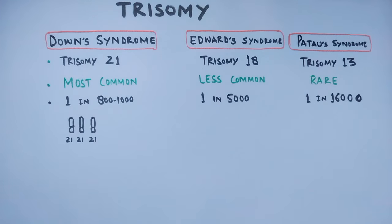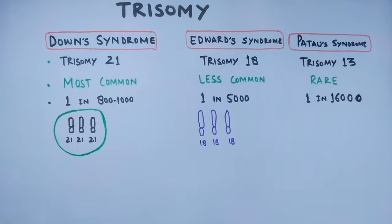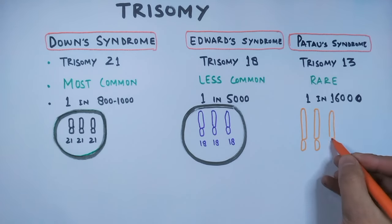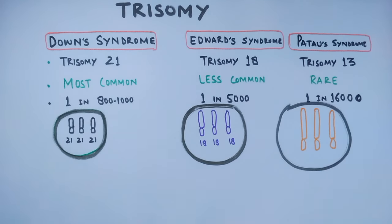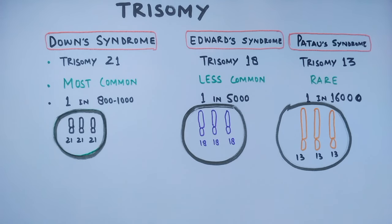Down syndrome has three copies of the 21st chromosome in the cell instead of two. In the same way, Edwards syndrome has three copies of the 18th chromosome in the cell, and Patau syndrome has three copies of the 13th chromosome. Sometimes only a part of the extra chromosome occurs, and that also leads to trisomy.